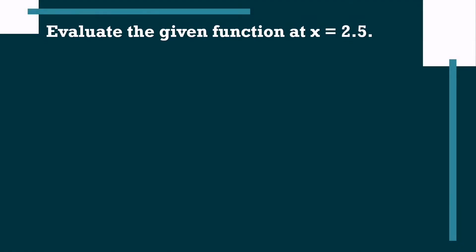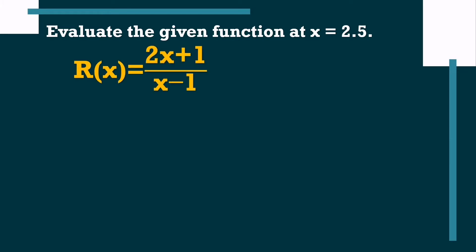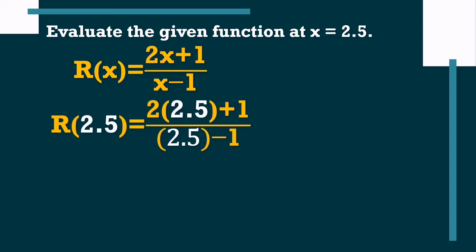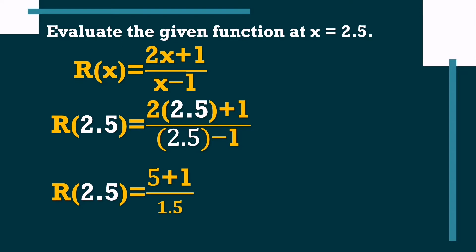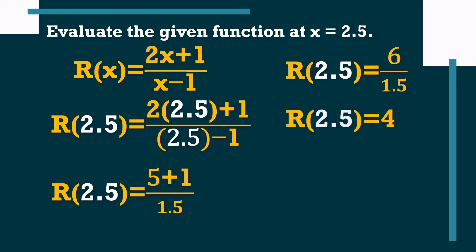This time, let's evaluate a rational function using the same value x equals 2.5. r(x) equals (2x plus 1) divided by (x minus 1). Substitute 2.5: r(2.5) equals (2 times 2.5 plus 1) divided by (2.5 minus 1). Simplify: numerator is 5 plus 1 equals 6; denominator is 1.5. The quotient of 6 and 1.5 is 4. Therefore, r(2.5) equals 4.